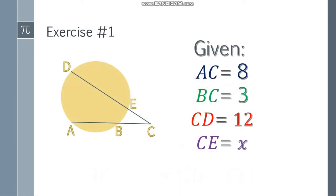Let's have the first example. Given: AC is 8, BC is 3, CD is 12, and CE we don't know. That's our goal - to find it.